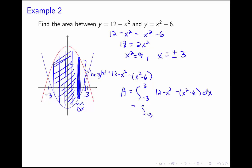So we have an integral from negative 3 to 3. This will be 18 minus 2x squared dx.